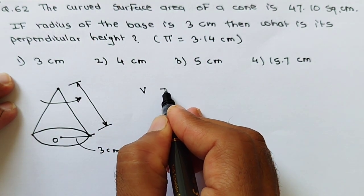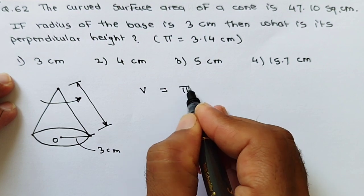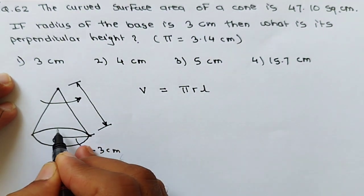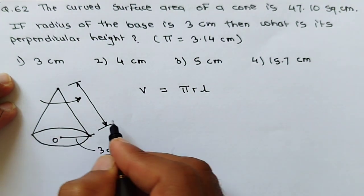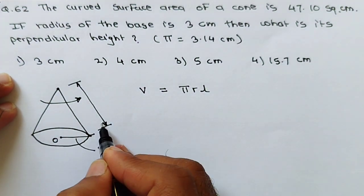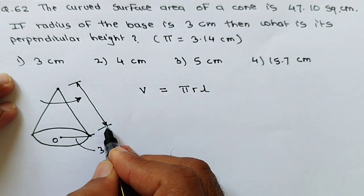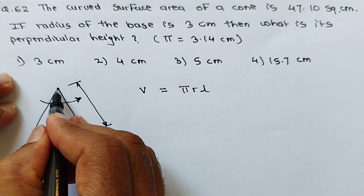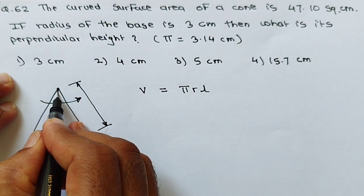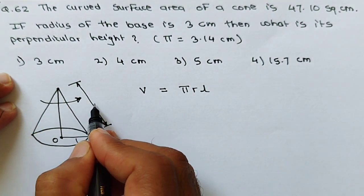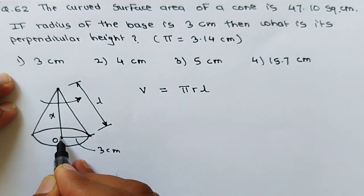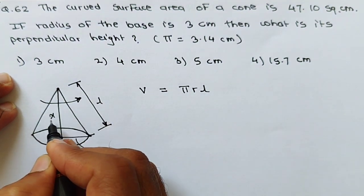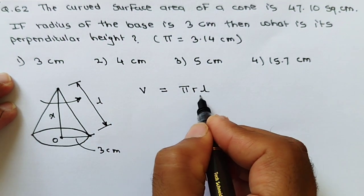The curved surface area V equals pi R L. What is asked is the perpendicular height, not the slant length L. So first we calculate L, and from L we calculate the perpendicular height X. We have V equal to 47.10, pi is 3.14, and R is 3 centimeters. So L equals 47.10 divided by 3.14 into 3. Canceling the decimal points, this becomes 4710 divided by 314 into 3.